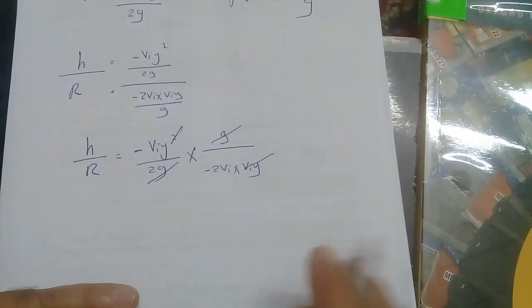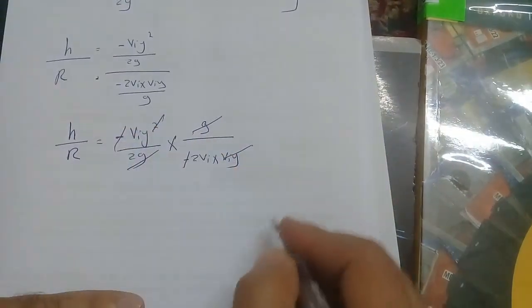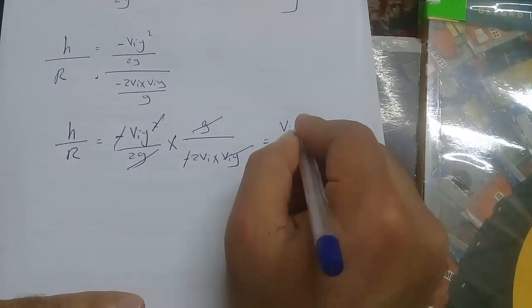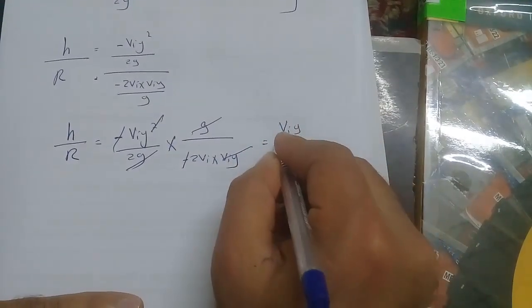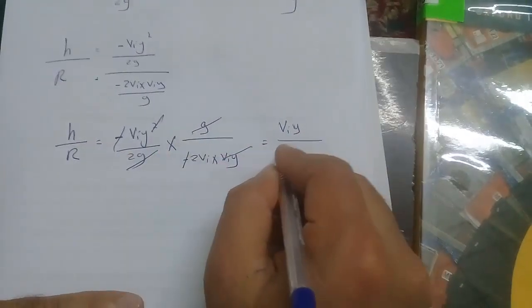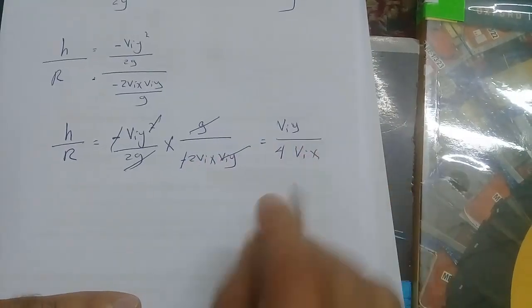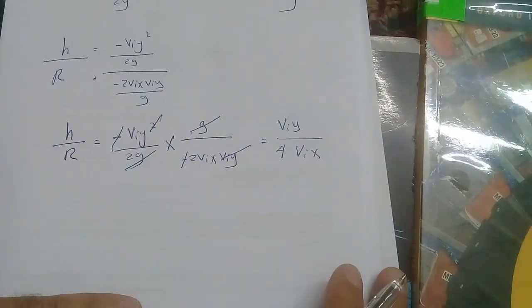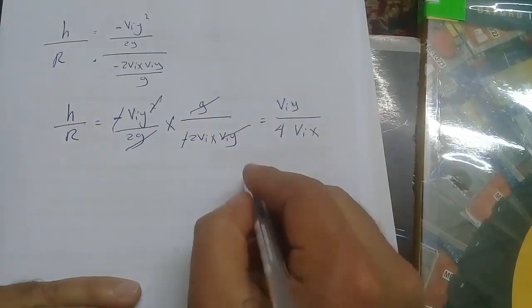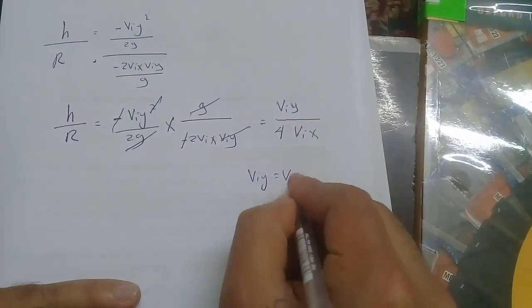V_iy cancels, and negative cancels with negative. So we can write it as V_iy divided by 2, multiplied by 2, equals 4·V_ix. We have also learned that V_iy equals V_i·sine(θ) and V_ix equals V_i·cosine(θ).